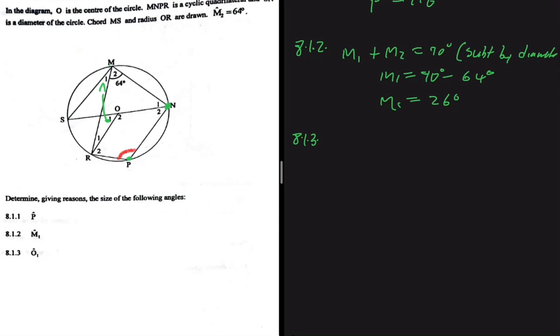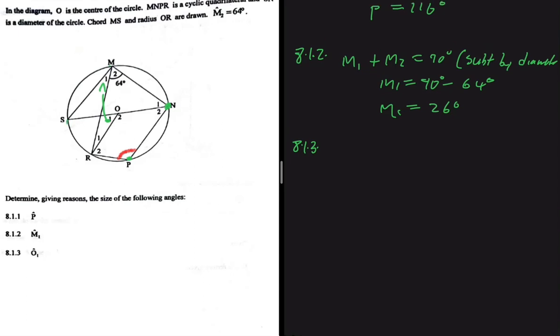You can see here that O1 is a consequence of SR here, and the same is true with M1. O1 is at the center and M1 is at the circumference. So now we can see that O1 equals 2 multiplied by M1. But what is M1? M1 is 26 degrees. So 2 multiplied by 26, that will be 52 degrees.